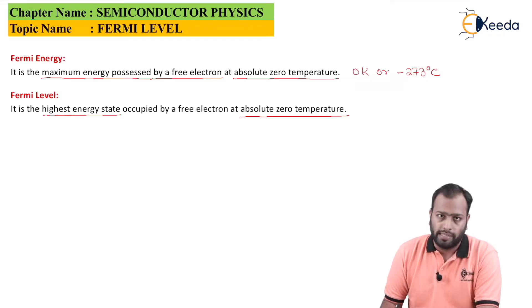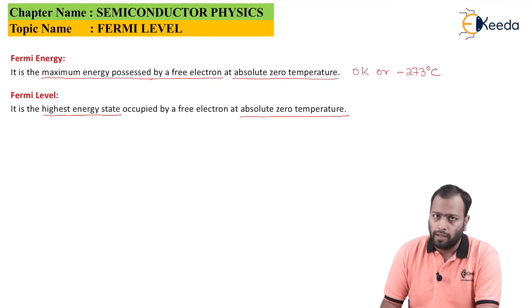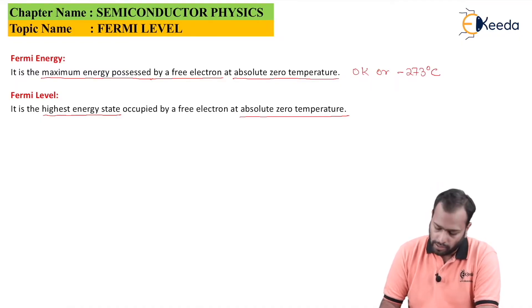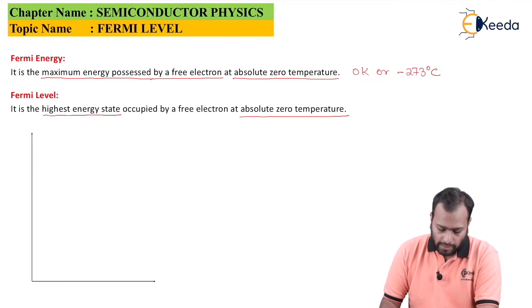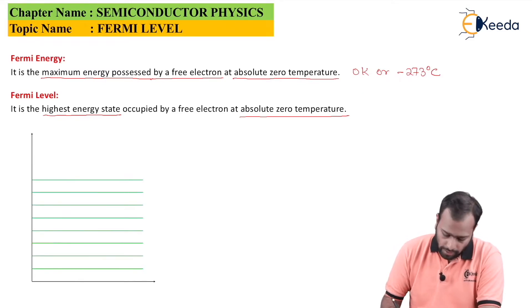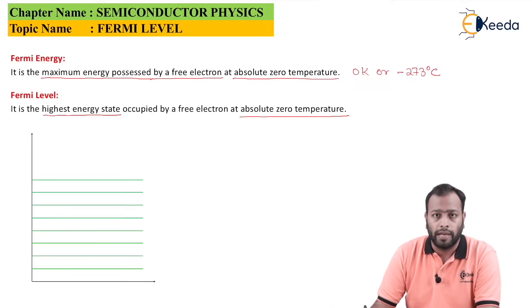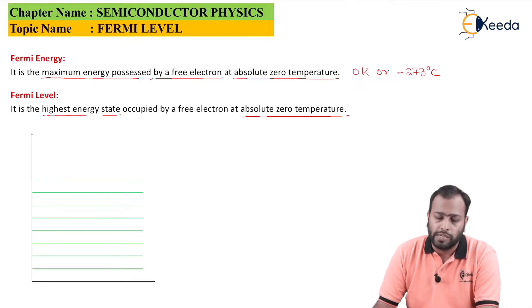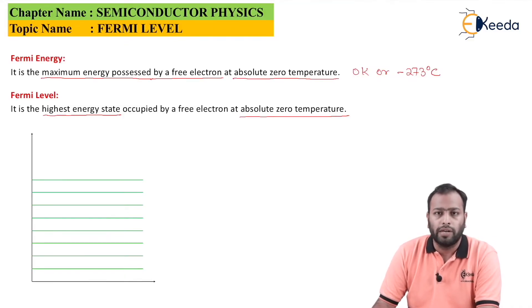How do you basically distinguish between these two? Let's take an example of a material — this could be a metal or any probable element or substance. This is the energy state diagram. The green lines you can see are the various states of energy. States of energy are regions, or particularly the hierarchy of energies.